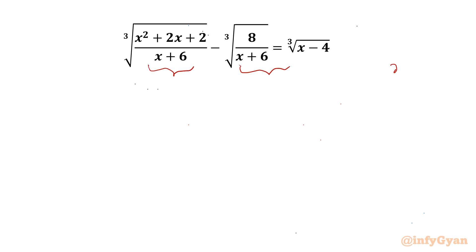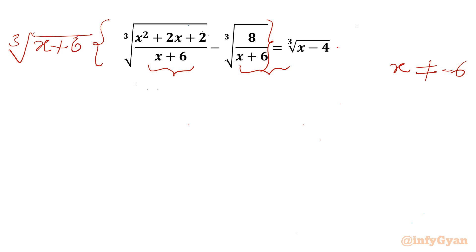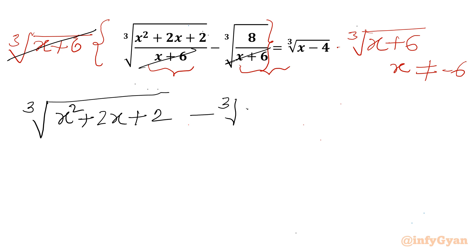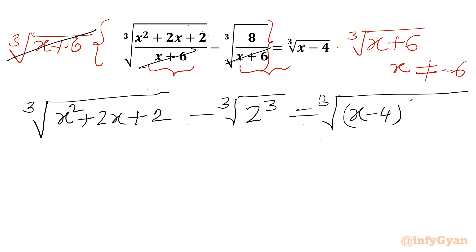The denominator cannot be equal to 0, so x cannot be negative 6. Now I will multiply both sides by the denominator cube root of (x + 6), on the RHS also cube root of (x + 6). On the LHS we can cancel the denominator with the multiplier. So we can write: cube root of (x² + 2x + 2) minus cube root of 8 — and 8 we can write as 2³ — equal to cube root of (x − 4) times (x + 6).